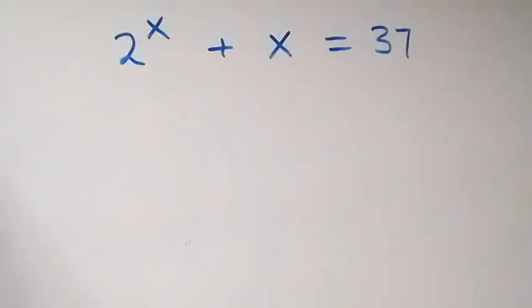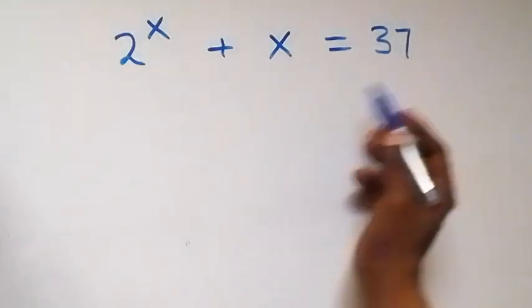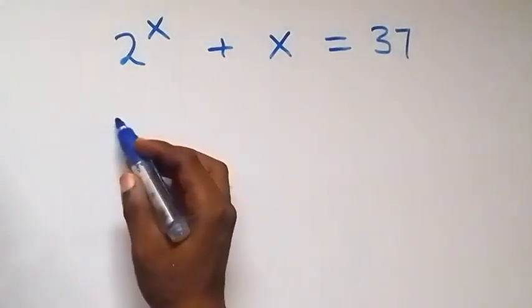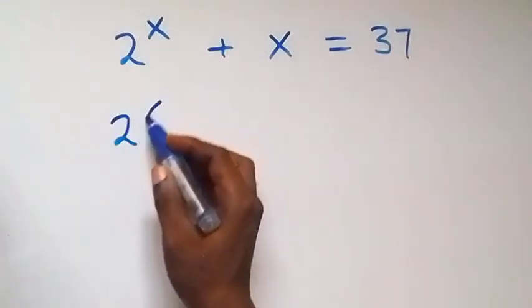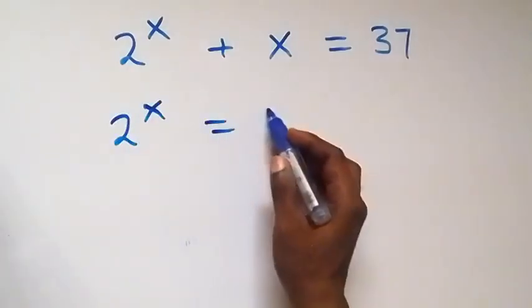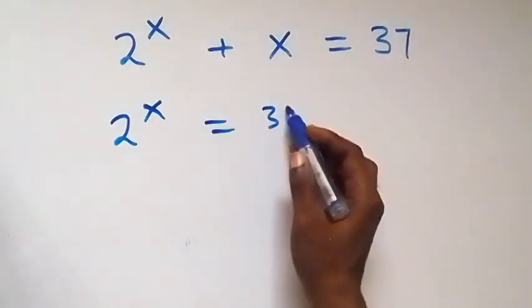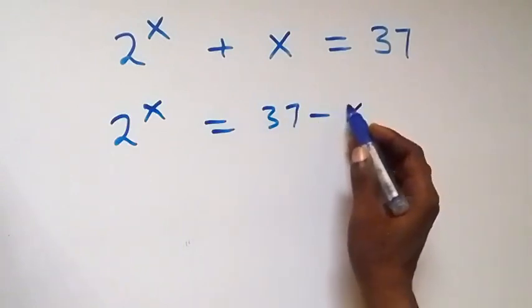Hello, you are welcome. We need to solve for x in this math problem. Let's take x to the other side, and this becomes 2 raised to power x equals 37 minus x.